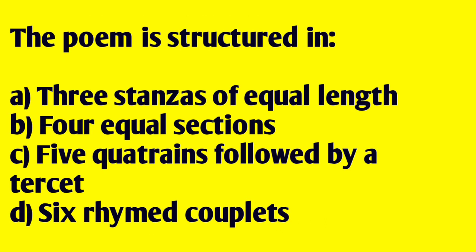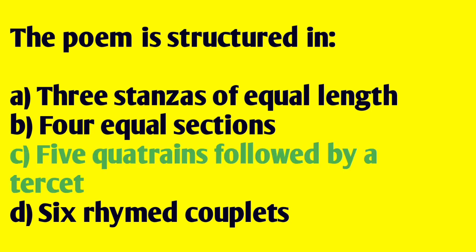Next, the poem is structured in: A. Three stanzas of equal length, B. Four equal sections, C. Five quadrants followed by a tercet, D. Six rhymed couplets. The answer is five quadrants followed by a tercet.